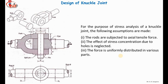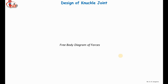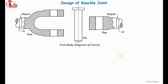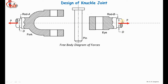First, let us design rods A and B. After the application of tensile force, the rods are subjected to axial tensile force. From the free body diagram, applying axial tensile force P on the rod of the eye and rod of the fork, there is a possibility of failure of the rod in tension at a critical cross section.